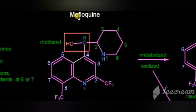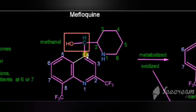Today we are going to see mefloquine. This is the structure of mefloquine. It is coming under 4-aminoquinolines, but it is not having an amino group in the 4th position. It is actually a newer 4-aminoquinoline.